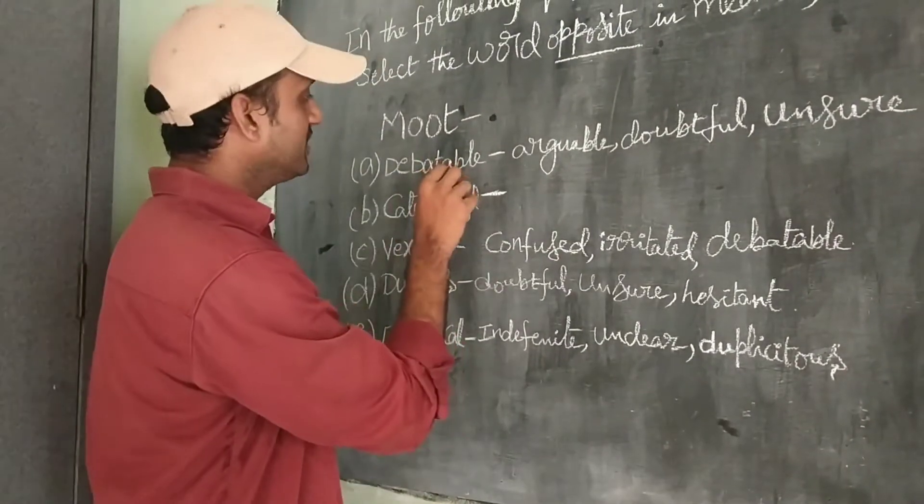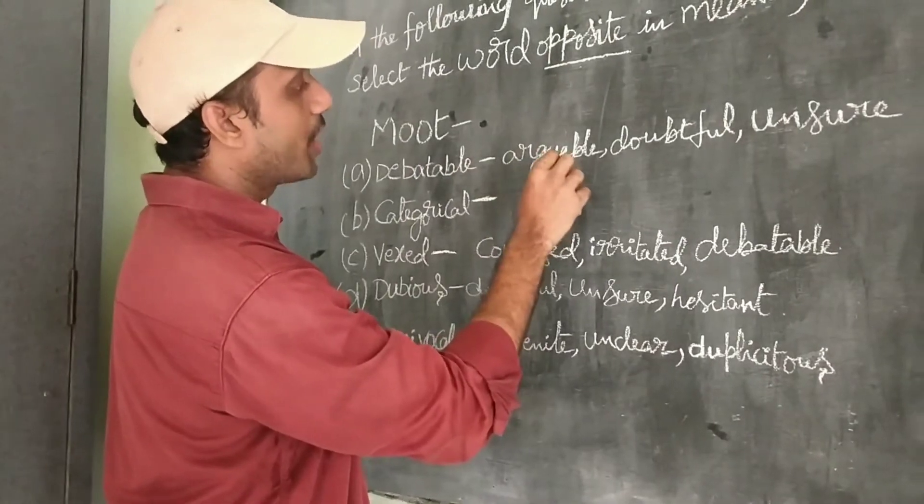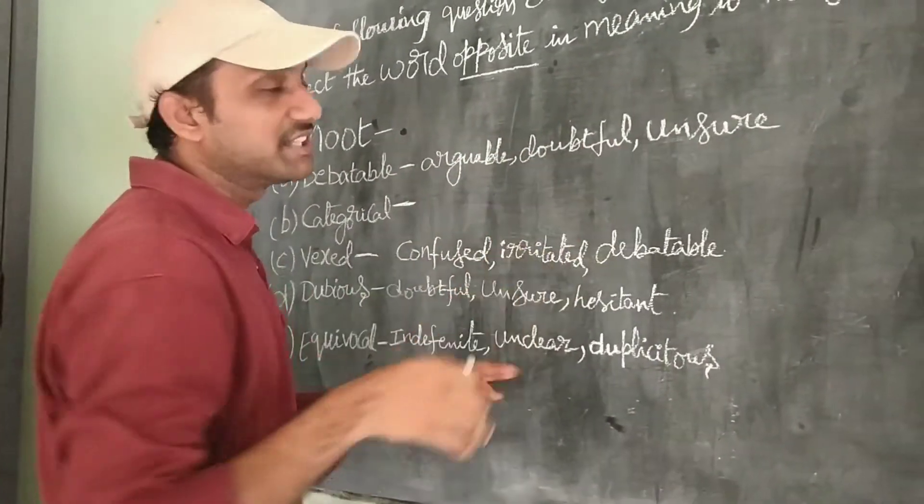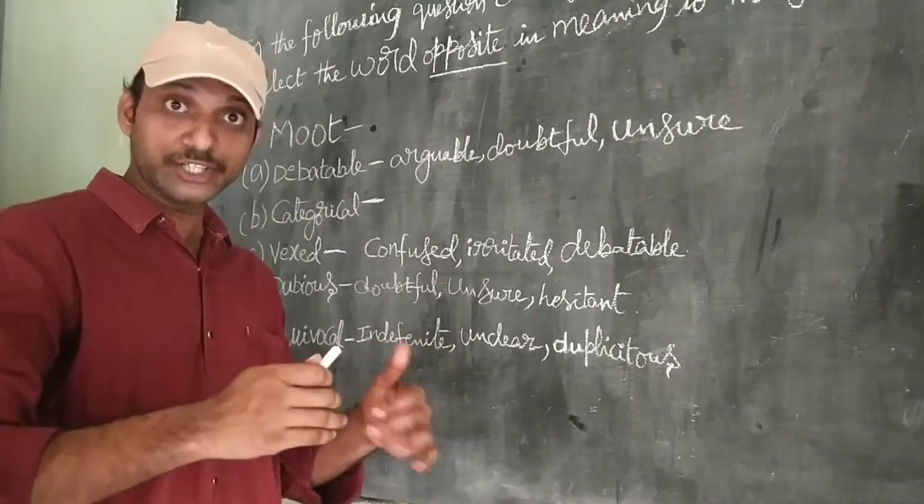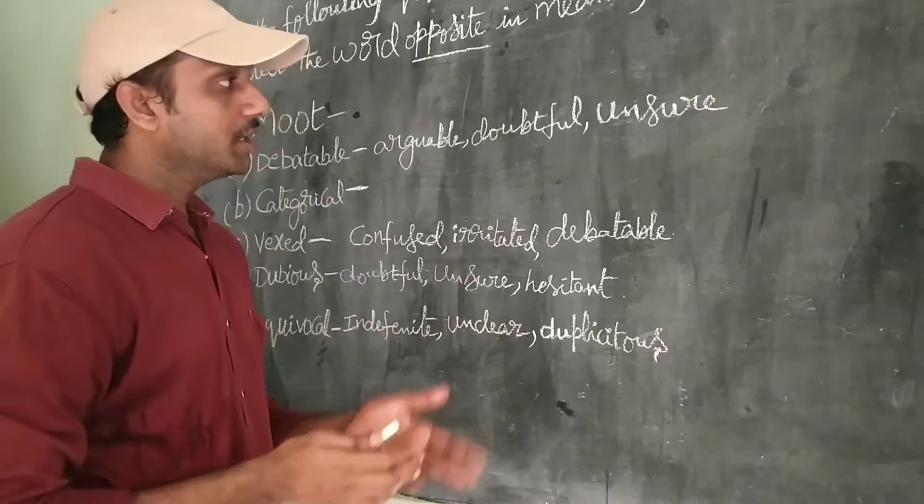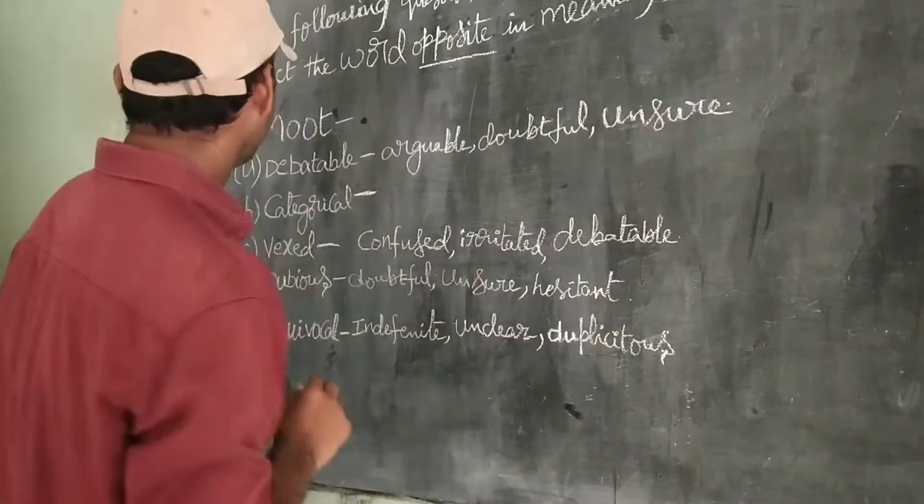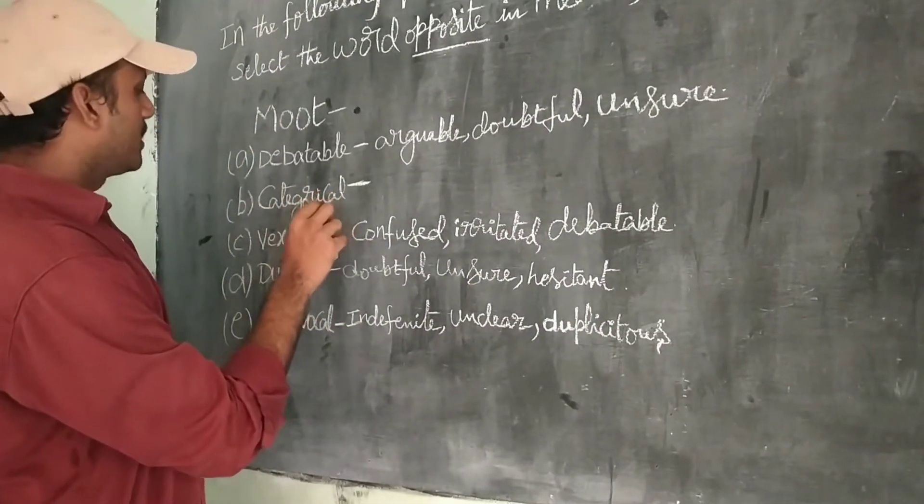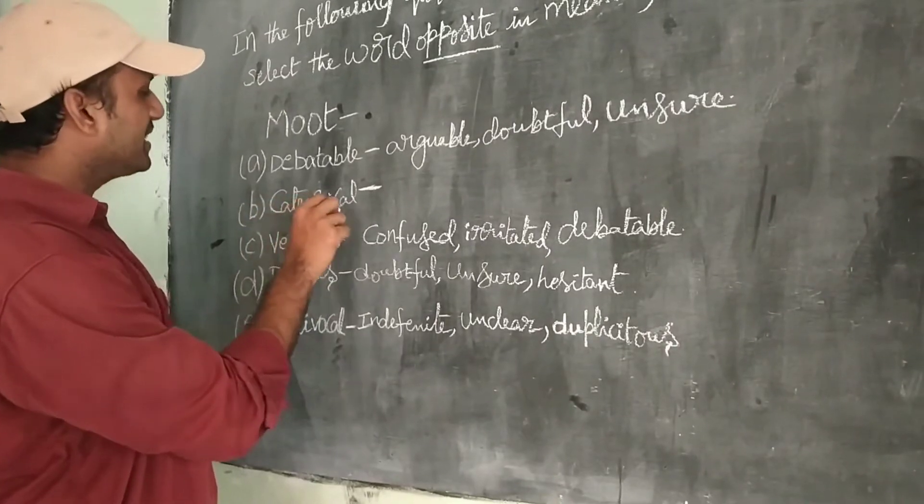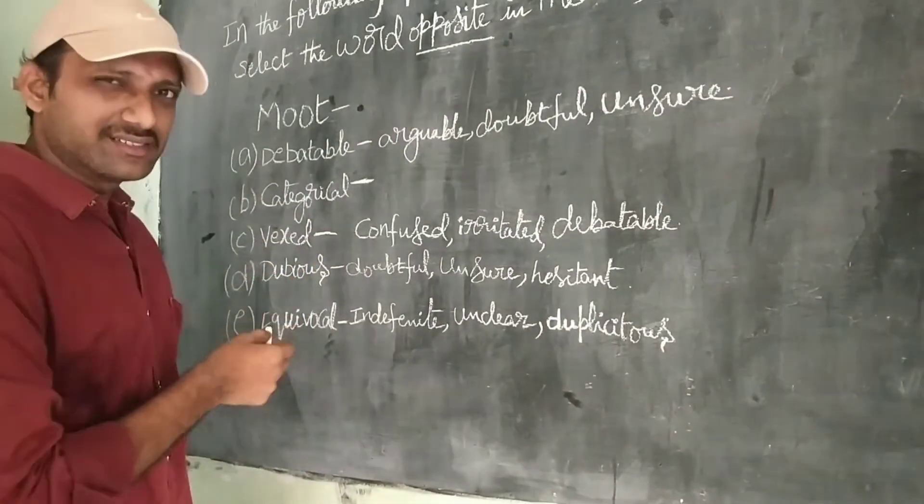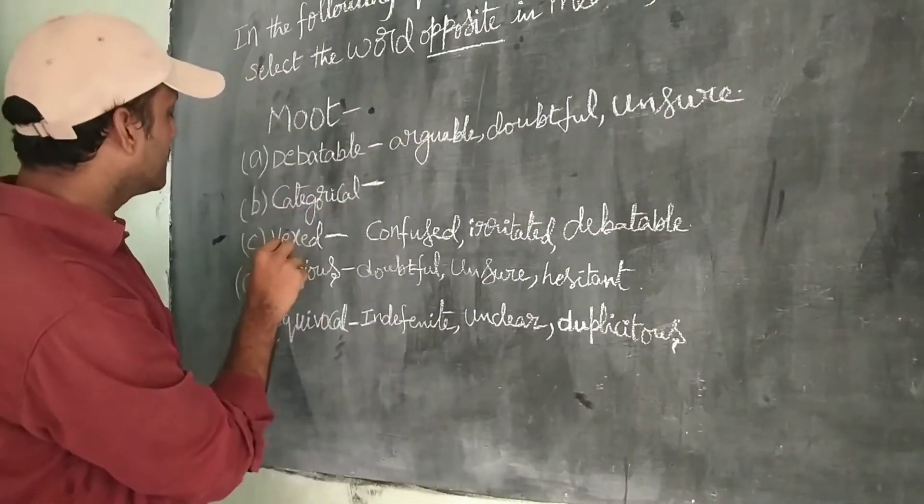In that, let us see, debatable refers to arguable, doubtful, unsure. In the sense, I am having some doubt on that. So that's why I am ready to debate with you. I am not sure about it. For that, we can say unsure. At the same time, I don't know what is the meaning of categorical is not under this.